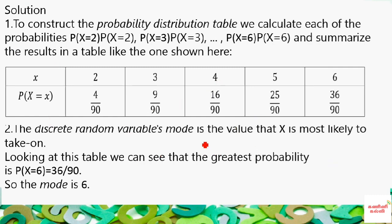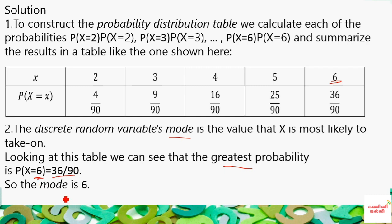Now we find the mode. The mode corresponds to the maximum probability. The denominator is the same (90), so we compare numerators: 4, 9, 16, 25, 36. The greatest probability is 36/90, and the corresponding x value is 6. Therefore, mode = 6.